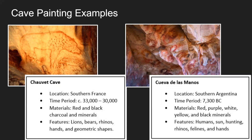Another cave painting example is the Cueva de las Manos, also known in English as the Cave of Hands. It's located in southern Argentina, with a time period of about 7,300 BC. Materials include red, purple, white, yellow, and black minerals — so they had an extra color. It features humans, the sun, hunting, rhinos, felines, and hands. The sun had significant impact in most ancient cultures and was heavily featured. And since they were hunter-gatherers, hunting is quite a predominant theme in cave paintings.